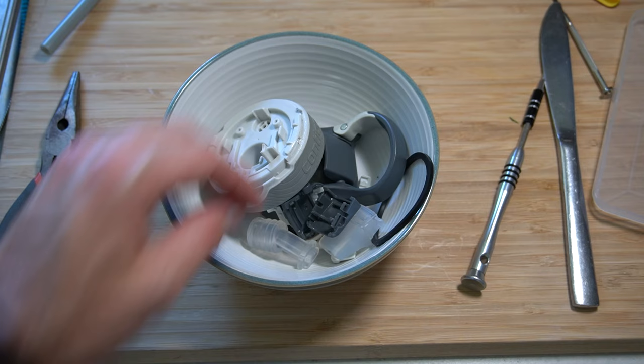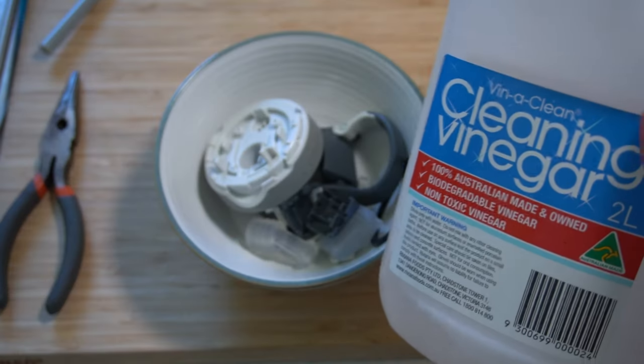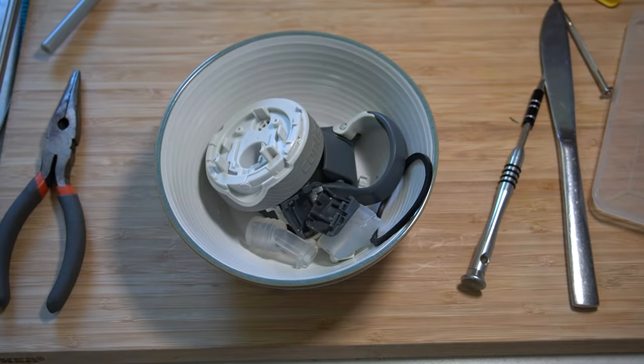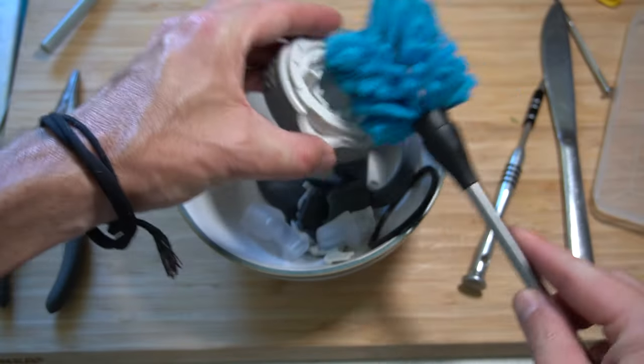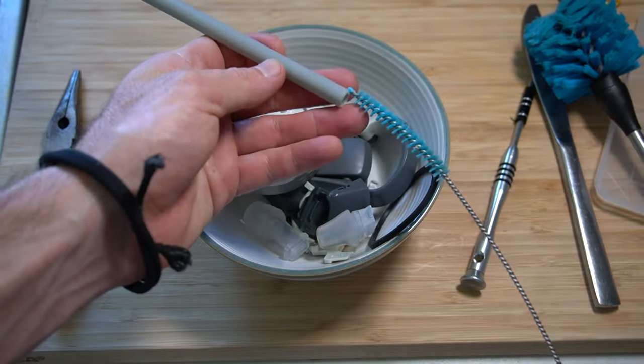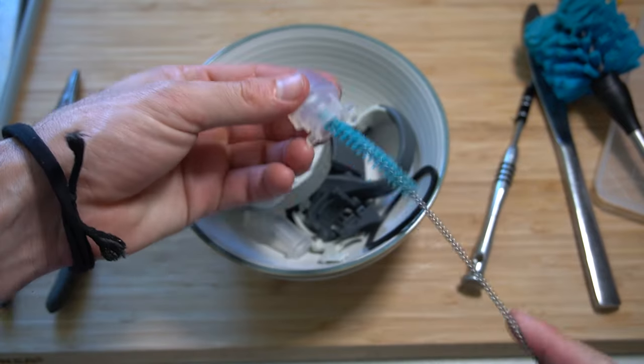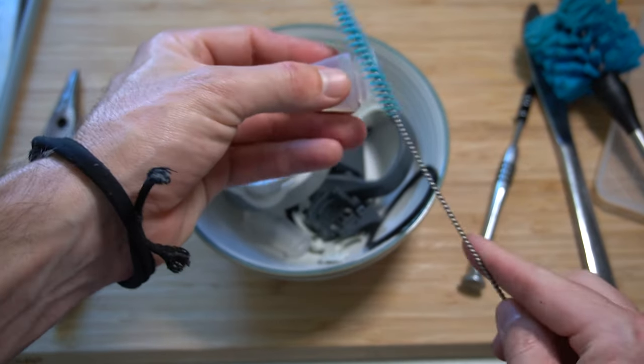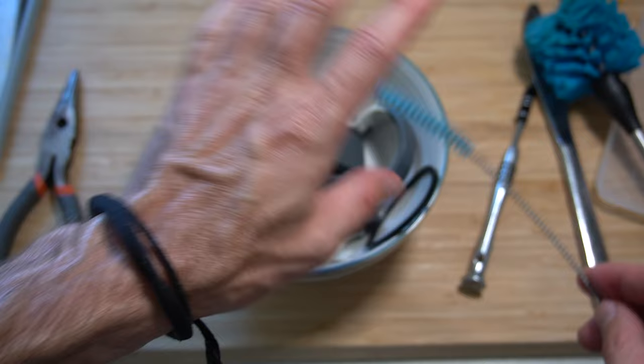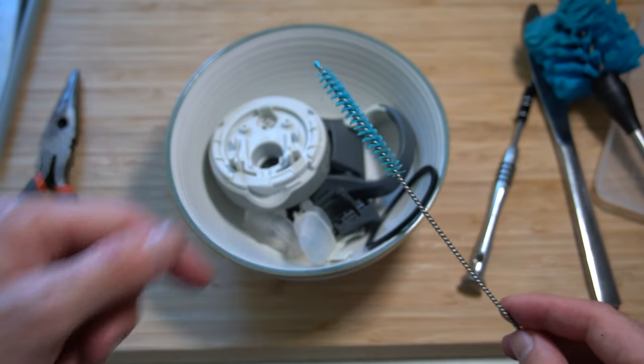Now you can go ahead and give everything a good clean. I like to soak everything in vinegar in order to kill the mold. And then I'll go ahead and I'll get in there with a bottle brush as well as a straw brush. To get into all these little sections, make sure everything is clean. I'll link to this bottle brush set down in the description below.